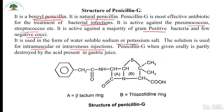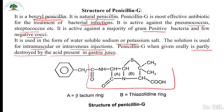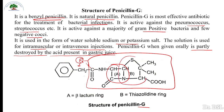Penicillin G, when given orally, is partly destroyed by the acid present in gastric juice. In the basic skeleton, when R is replaced by a benzyl group (C6H5CH2), it becomes penicillin G. Ring A is the beta-lactam ring — a 4-membered ring — and ring B is the 5-membered thiazolidine ring.